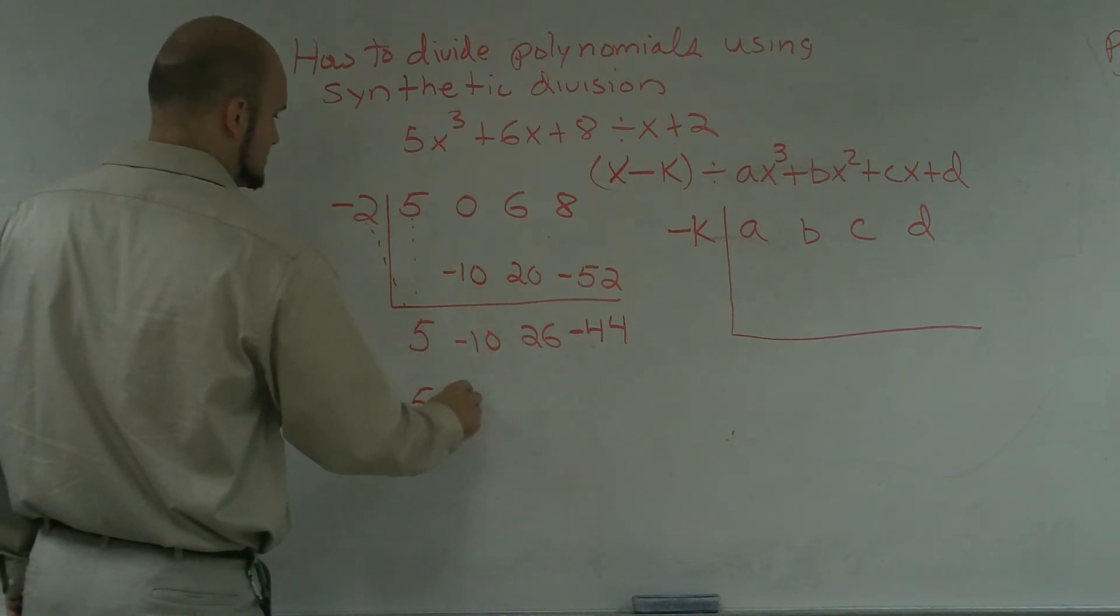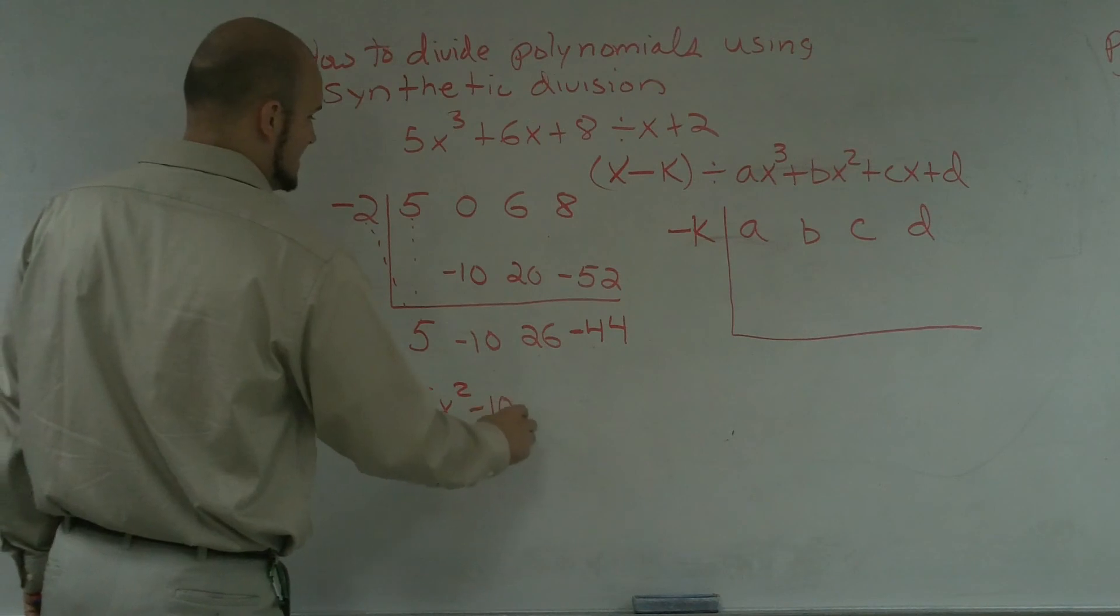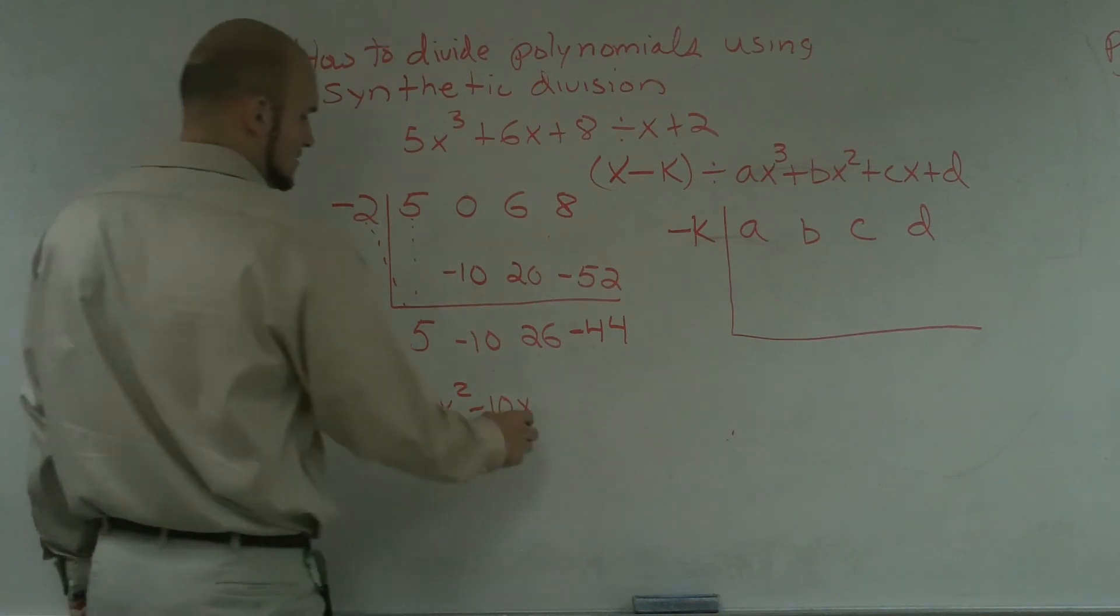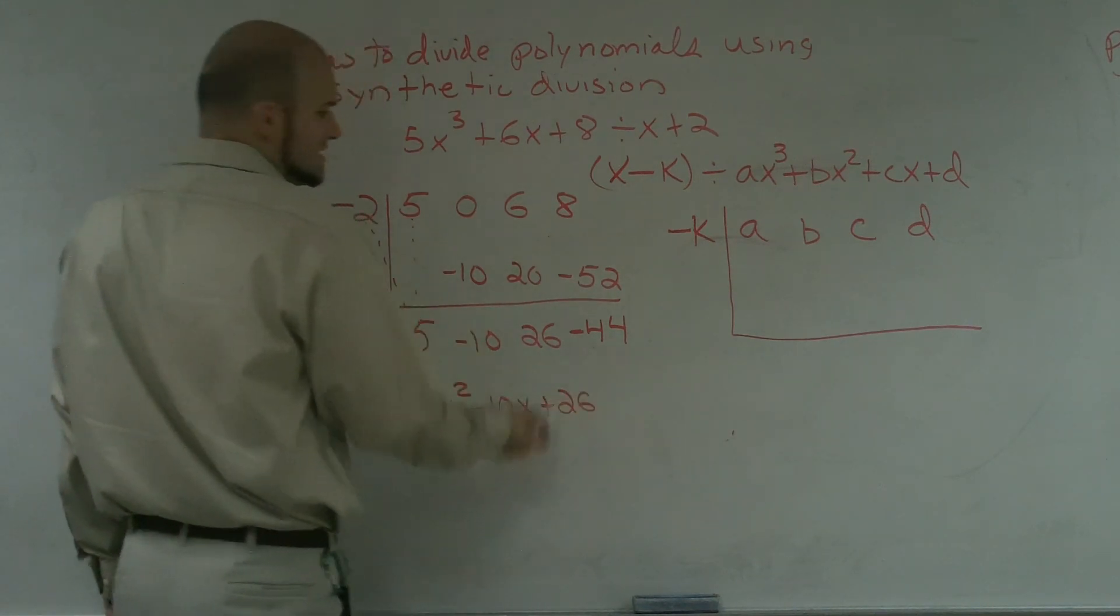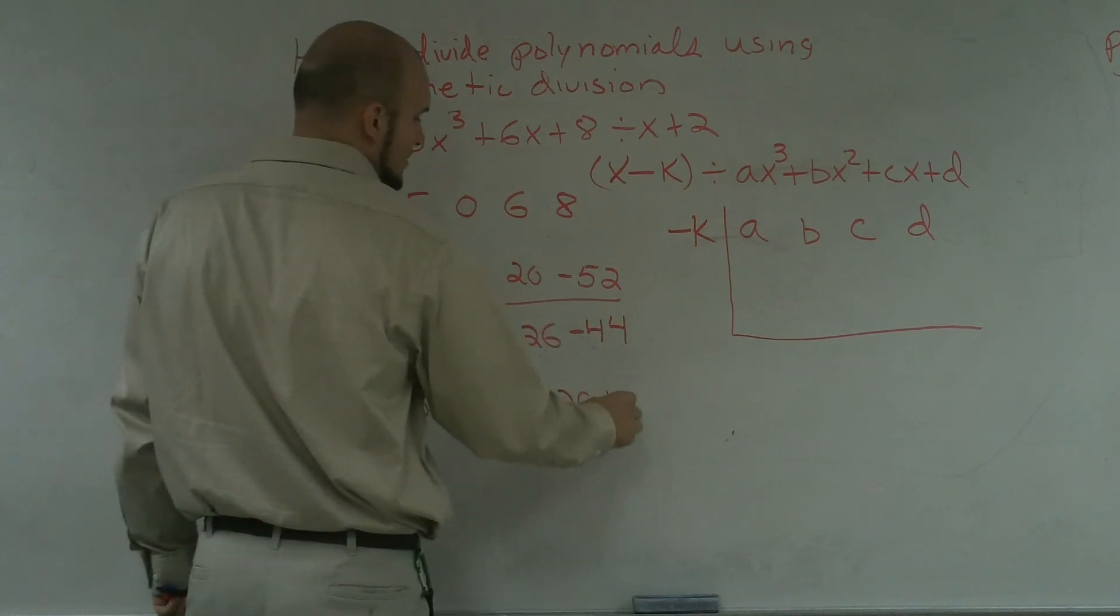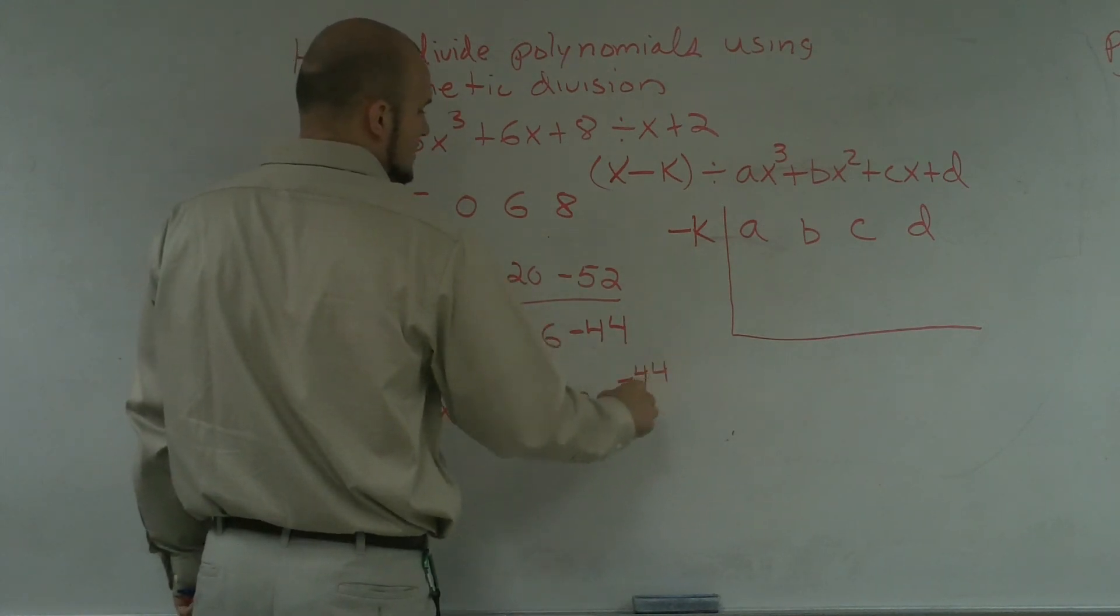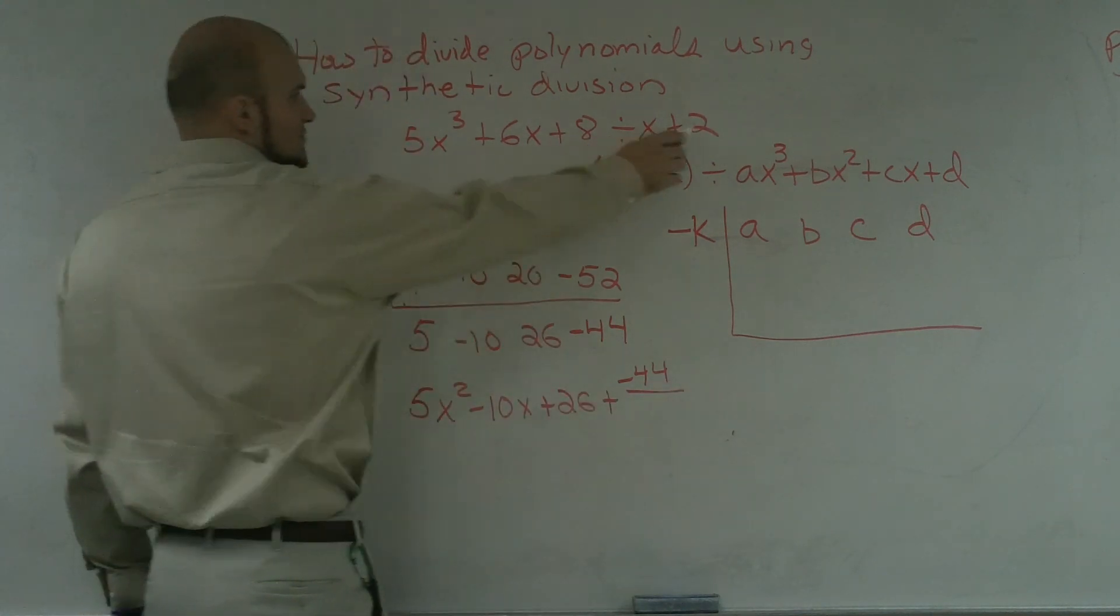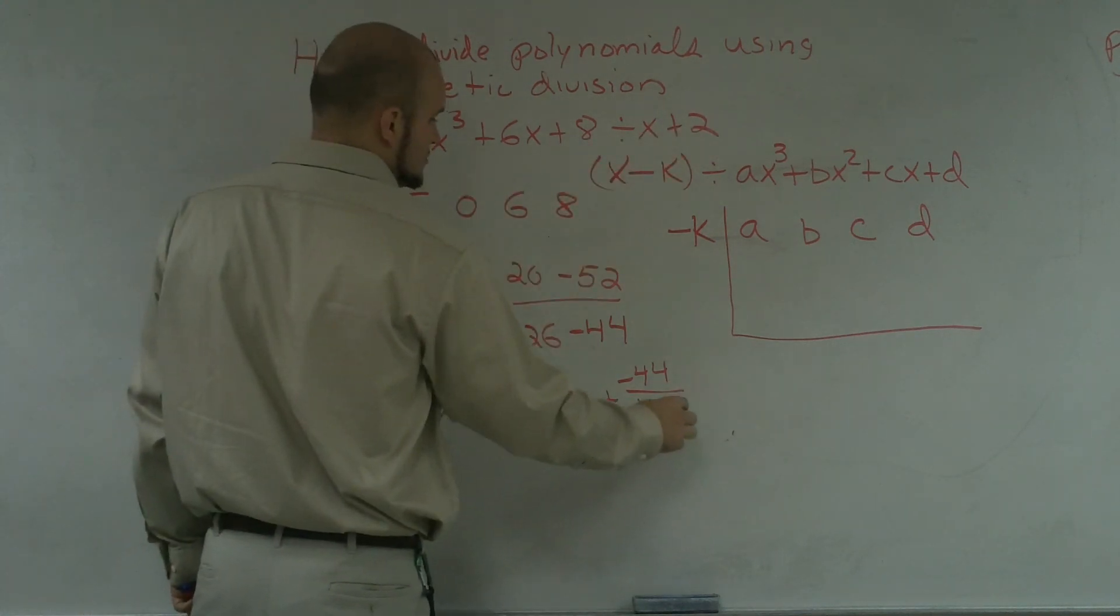So I have 5x squared minus 10x plus 26, and since this is negative 44, this is going to be my remainder, plus negative 44, divided by our divisor, which was x plus 2.